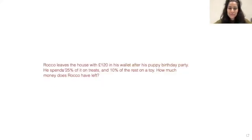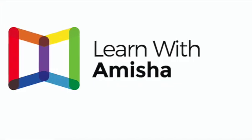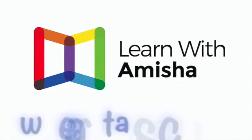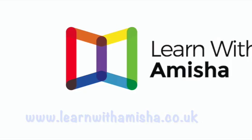Right, now it's your go. This is your question. Rocco leaves the house with £120 in his wallet after his puppy birthday party. He spends 25% of it on treats and 10% of the rest on a toy. How much money does Rocco have left? Remember to underline the key information. Take your time and post your answers in the comment box below. Good luck. That's all for today. I hope you found this video useful. See you again next week.